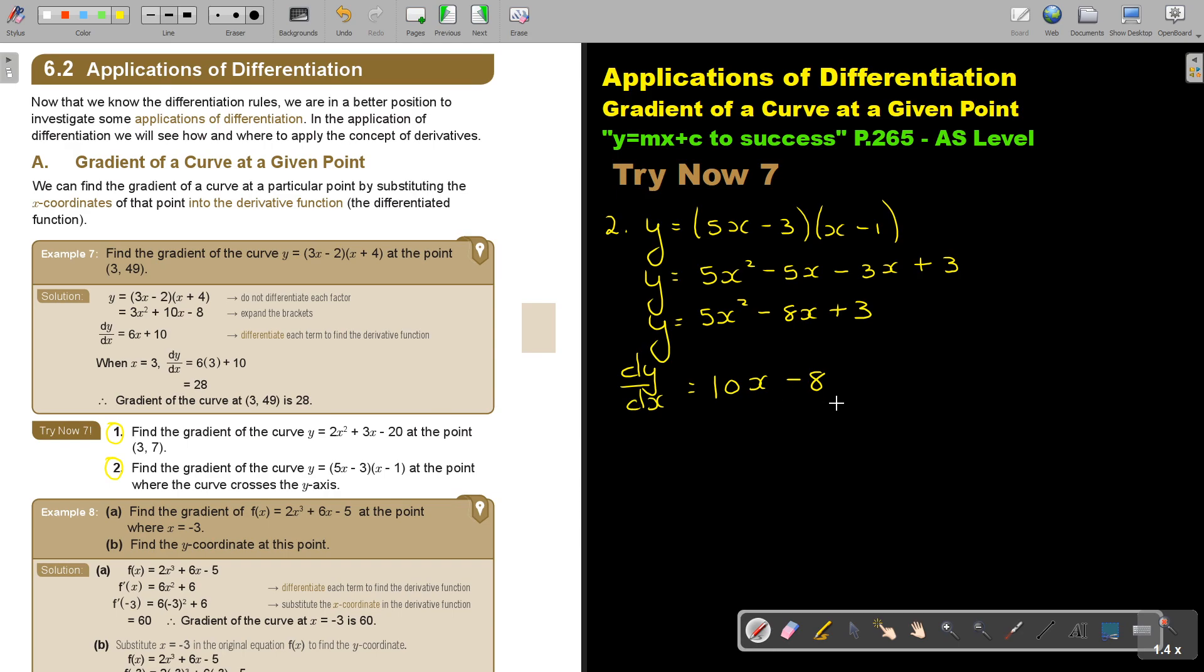So basically that is going to be the answer of the derivative function. But now, where the curve cross the y-axis. Can I just show you more or less a picture? So say for example, this and the curve, this curve cross the y-axis. It doesn't matter how it looks. It is going to be a positive 3.